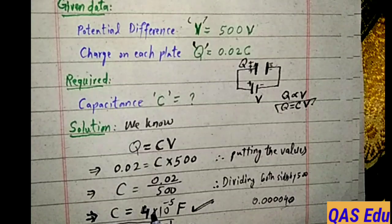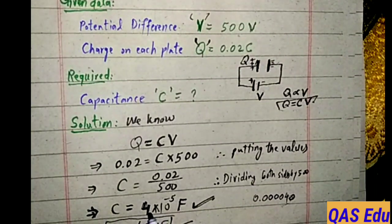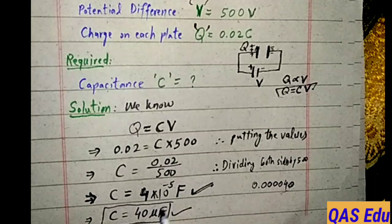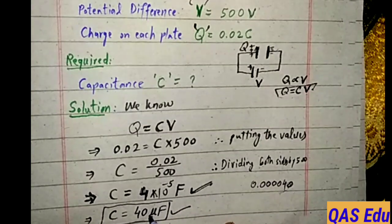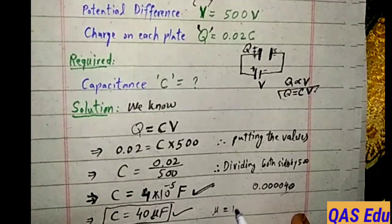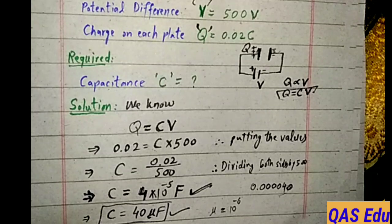Scientific notation gives 40 or 40.0 multiply by 10 power minus 1 and 10 power minus 5 becomes 10 power minus 6. That's micro, which is used for 10 power minus 6. So the capacitance is 40 micro farad.